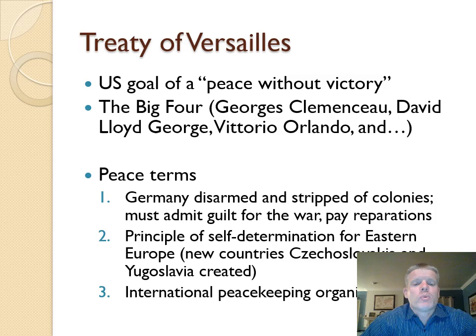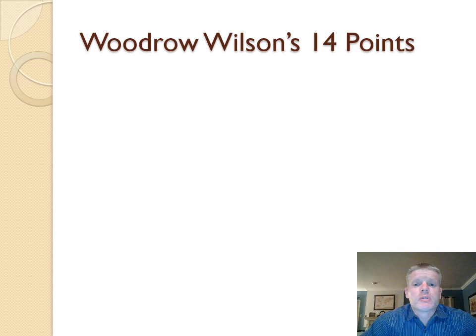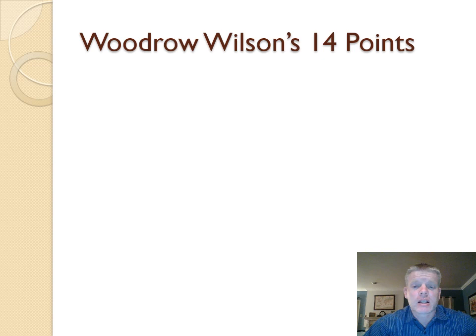The third point is really the big one Wilson pushed for: an international peacekeeping organization known as the League of Nations, supposed to prevent all future world wars. Since we call this World War One, we know it was not successful. One of our analyze activities this week is to read Wilson's 14 Points — 14 ideas for how to achieve peace without victory and a lasting world peace for generations to come. You should read them and answer the reflection questions as part of the analyze assignment this week.